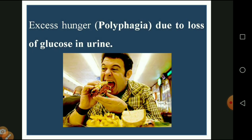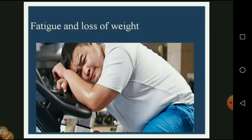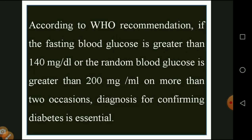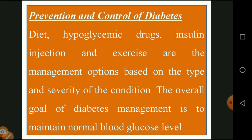Fifth, excess hunger — polyphagia — due to loss of glucose in the urine, making the body need more glucose, so the person continuously eats. Sixth, loss of body weight, which takes place particularly in Type 2 diabetes. According to WHO recommendations, if fasting blood glucose is greater than 140 mg/dL or random blood glucose is greater than 200 mg/dL in more than two patients, it is essential to confirm the diagnosis of diabetes.